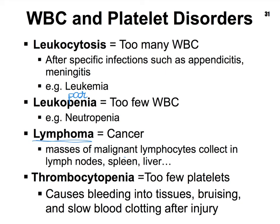Lymphoma is a form of cancer where many malignant lymphocytes accumulate in some of the lymph nodes, the spleen, and the liver. Thrombocytopenia — since you know what penia means — means too few platelets, which can occur due to excessive bleeding, or it could be due to some kinds of chemicals such as chemotherapy. Other medications can also introduce thrombocytopenia. This then is the end of our discussion of all of the formed elements.